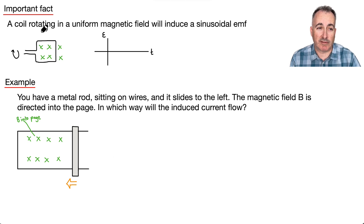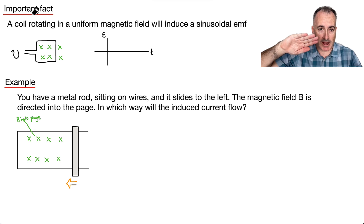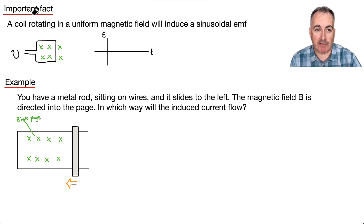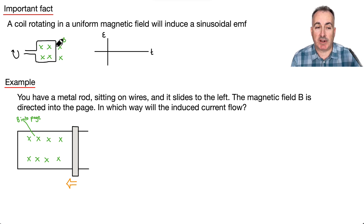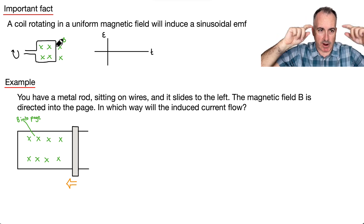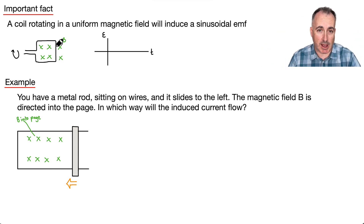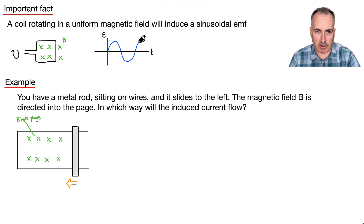Now, before we had the object sitting still and the magnets moving. This time, what if we have a uniform magnetic field into the page, and we take a coil of wire and spin it? The same thing happens — it also induces a sinusoidal EMF. So the graph will follow something like a sine curve.